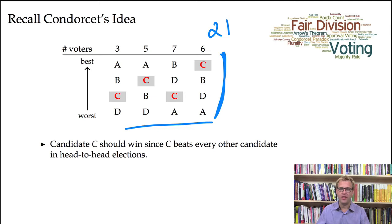Now Condorcet had the idea that candidate C should be declared the winner in this election, and the reason for that is that candidate C beats every other candidate in a head-to-head election.